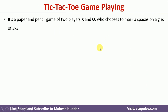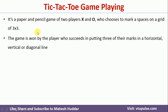First we will see what tic-tac-toe game playing is. It is a paper-pencil game of two players — let us say X and O. They choose to mark the spaces on a 3 by 3 grid. The one who succeeds in putting 3 of their marks in a horizontal, vertical, or diagonal line will be the winner.